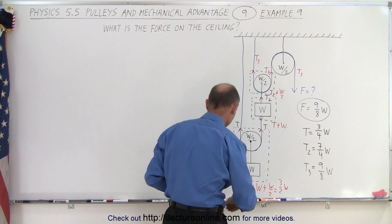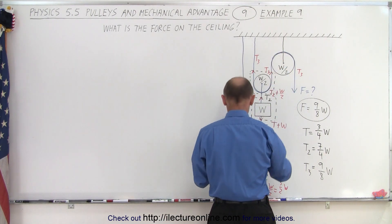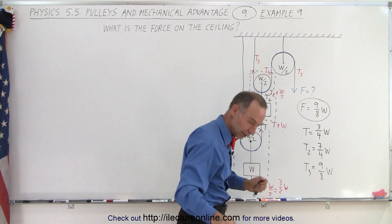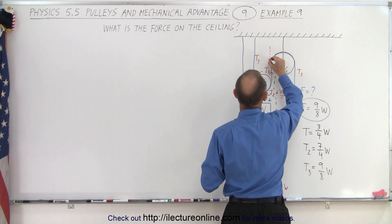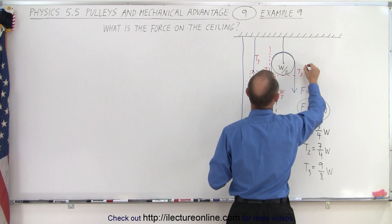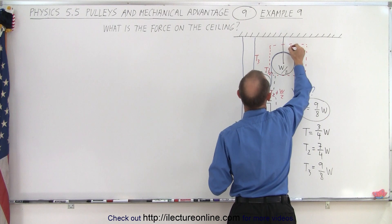We need to do one more free body diagram in order to do it correctly. We need to put a free body diagram, let me use a different color so we don't get confused here. So let's draw another free body diagram over here. In order to find the tension over here, let's call this tension T4.